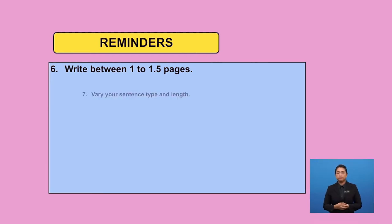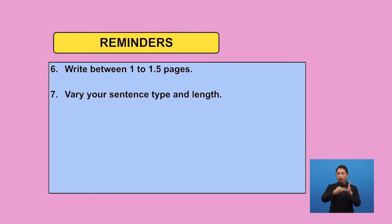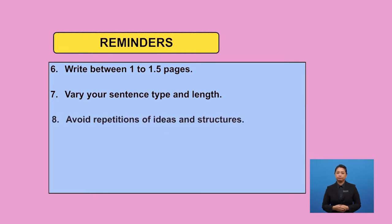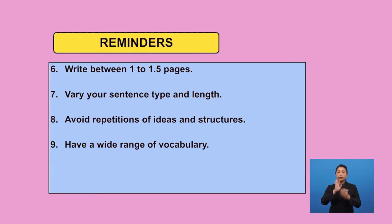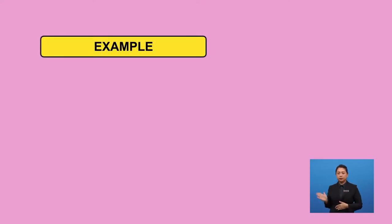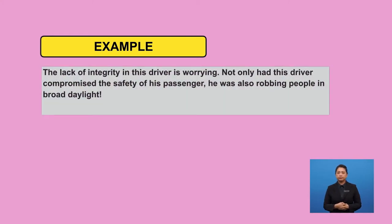The next tip is to vary your sentence structures. Twenty marks are allocated for language. One way to ensure that we can get high marks for language is by varying our sentence types: simple, compound, and complex. Avoid repeating the same structures when you write — your sentences should not sound repetitive, as this will only make reading dull for the examiners. Change the way you begin your sentence; this strategy always helps. For example: 'The lack of integrity in this driver is worrying. Not only had this driver compromised the safety of his passenger, he was also robbing people in broad daylight.'